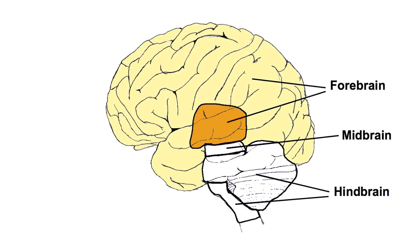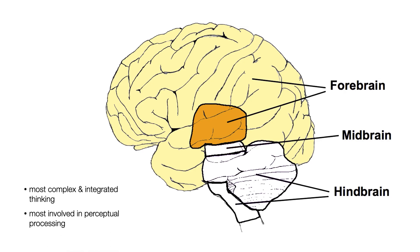Finally, we have the forebrain in the gold and yellow regions, and this is evolutionarily the most recent development of the brain. The forebrain consists of the smaller diencephalon, which is situated just above the midbrain, and the much larger telencephalon, or cerebrum. The forebrain handles our most complex and integrated thinking, particularly the outer cerebrum, and is the region of the brain most involved in perceptual processing.